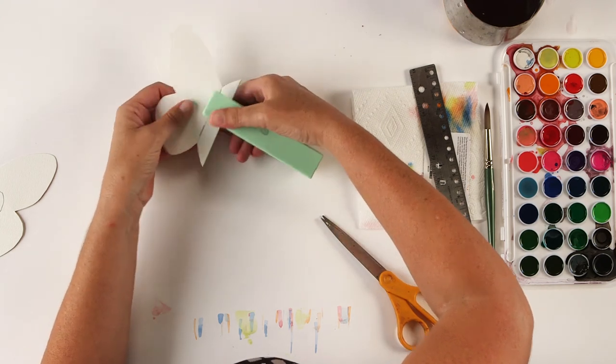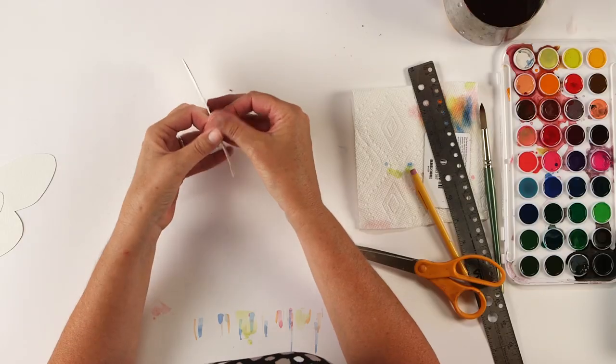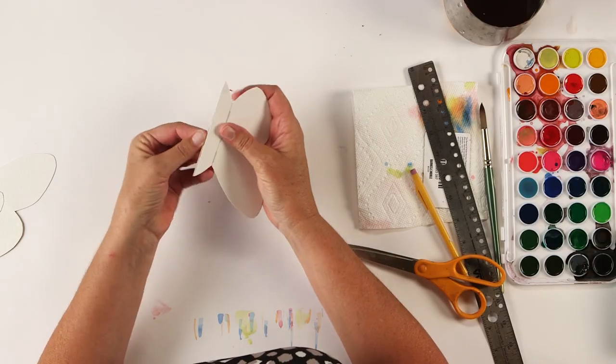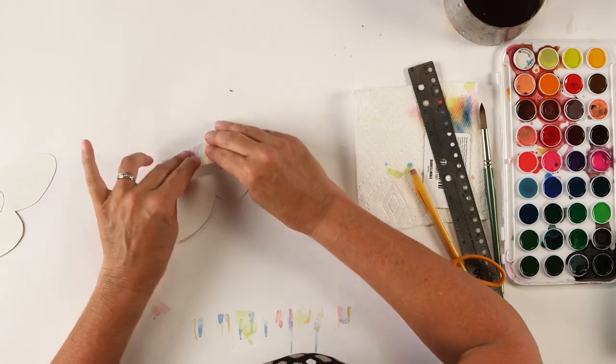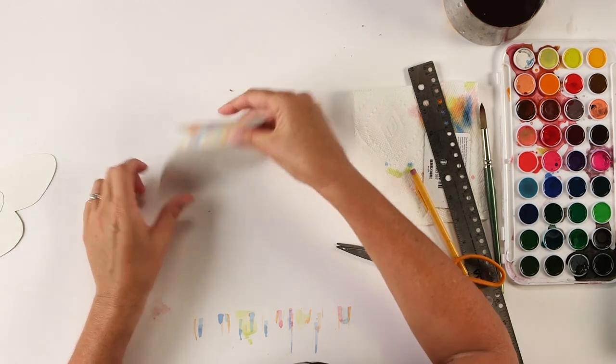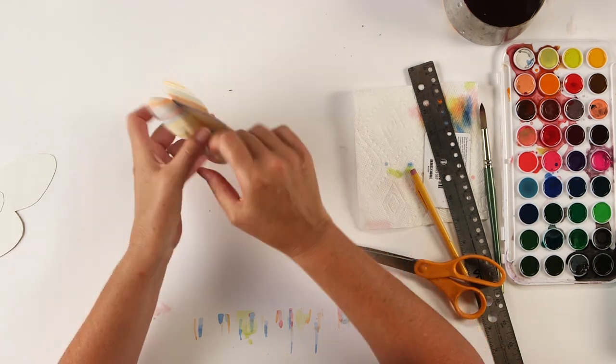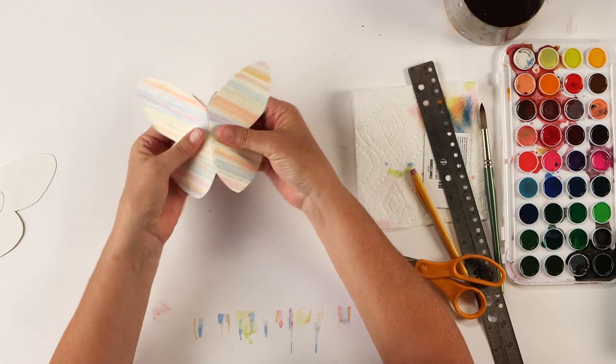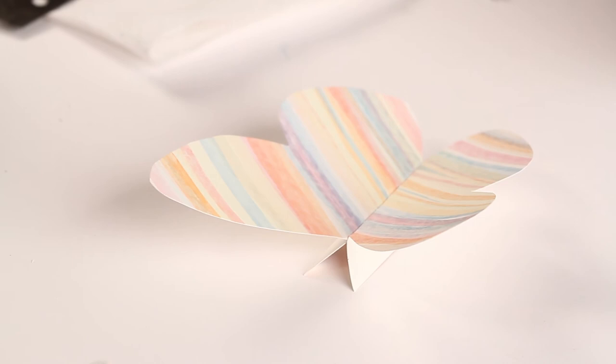And then I'm going to use my stapler and use my line to help guide me. And you'll need three staples, probably. If you have a bigger butterfly, you'll need four or five. And if you have a smaller one, you might need two. And now you just need to open this part and fold it back. And then turn it around and fold this one back. And then fold it down like that. And you have a beautiful butterfly.